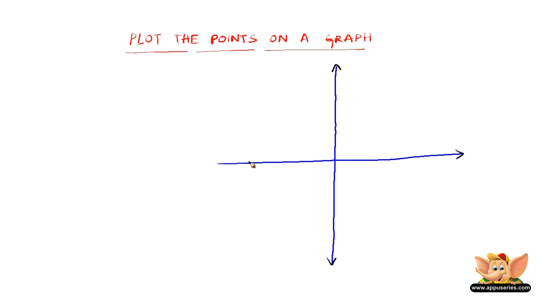We all know that this is the O origin, this is positive x axis, this is negative x axis O x dash, and O y the positive y axis and O y dash the negative y axis.